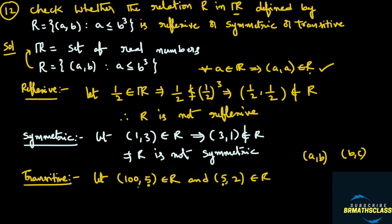First, I check that (100, 5) is in the relation: is 100 less than or equal to 5 cube? 5 cube is 125, and 100 is less than or equal to 125 — yes. So (100, 5) belongs to the relation. Next, is (5, 2) in the relation? Check if 5 is less than or equal to 2 cube. 2 cube is 8, and 5 is less than 8 — yes. So the ordered pair (5, 2) is in the relation.